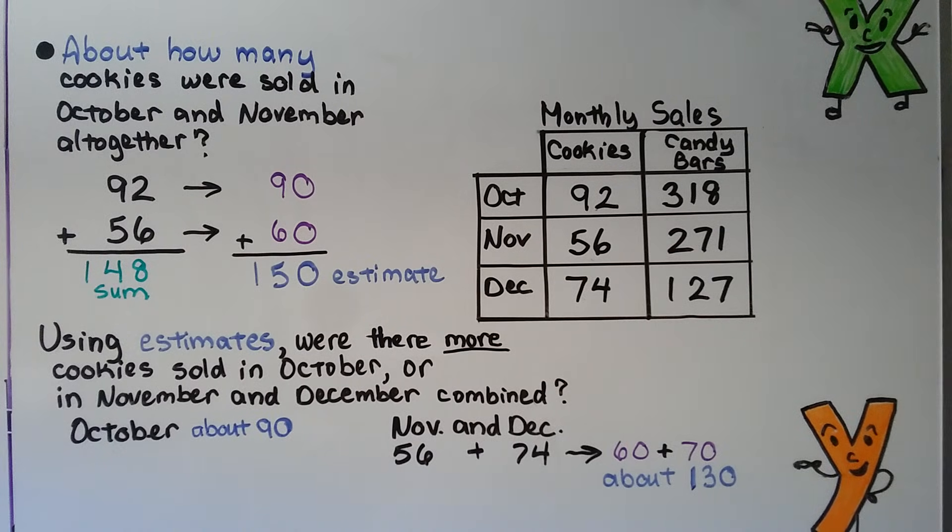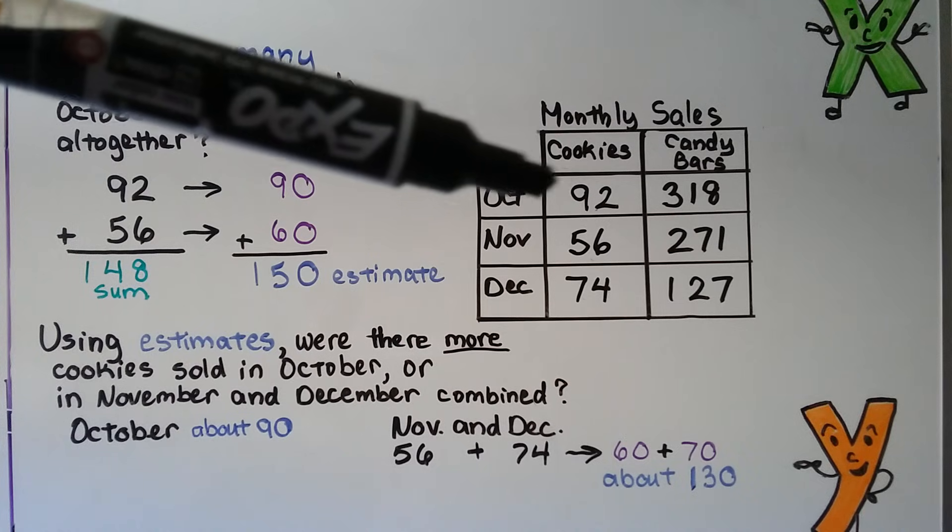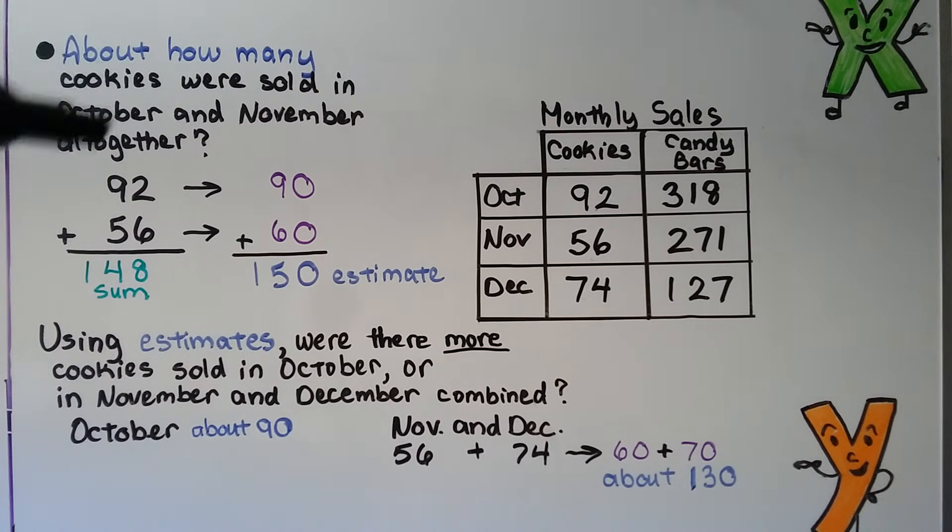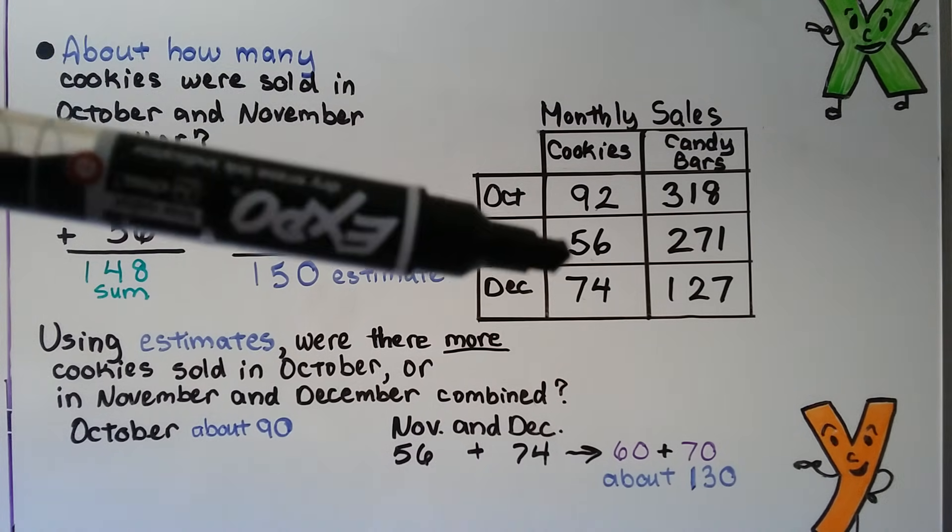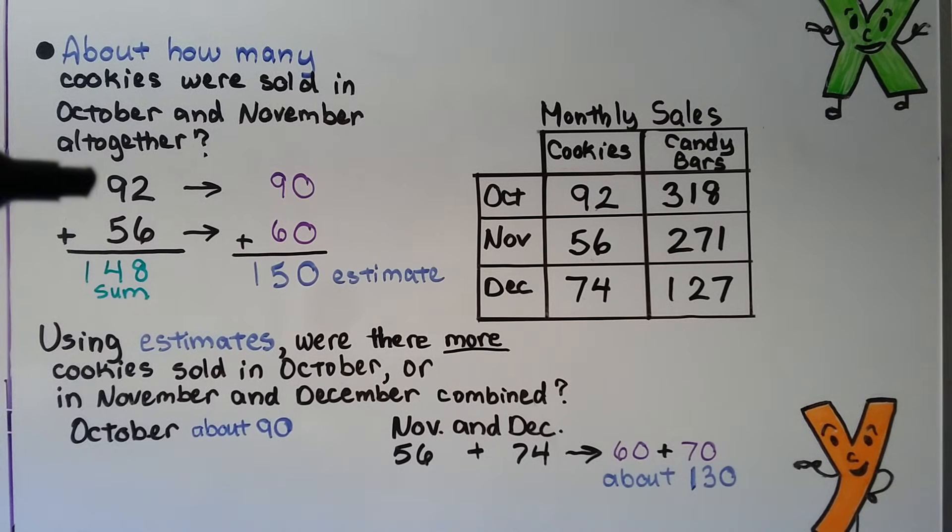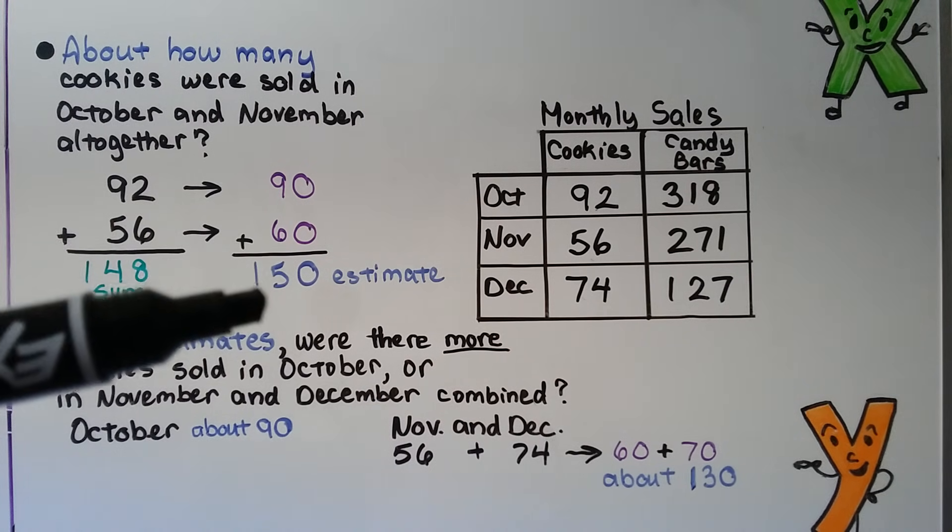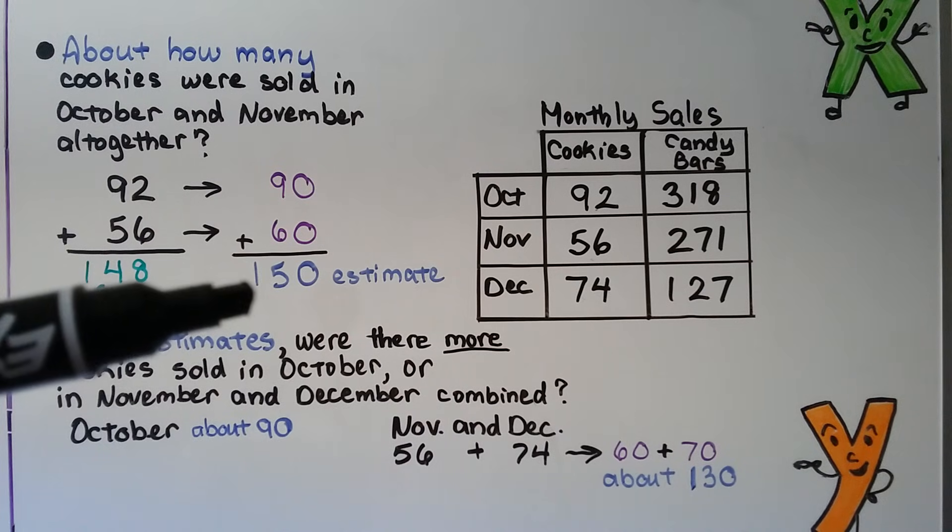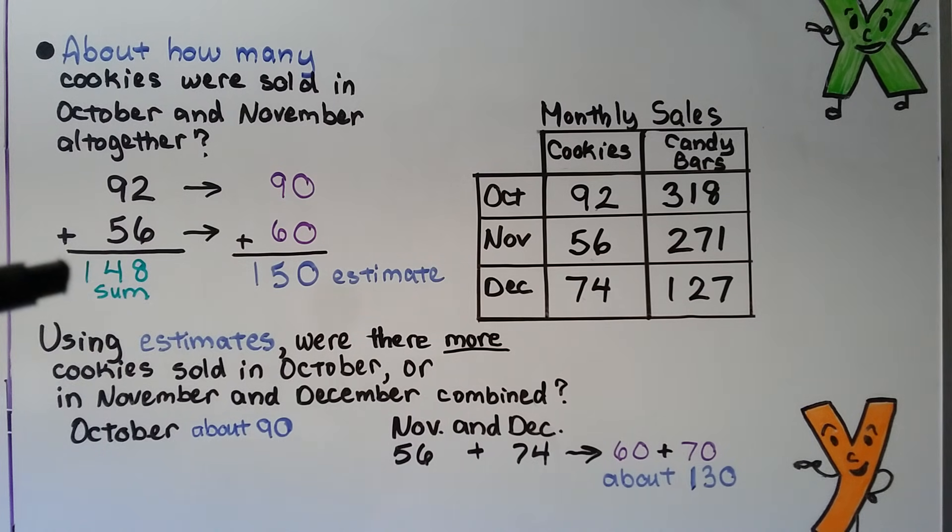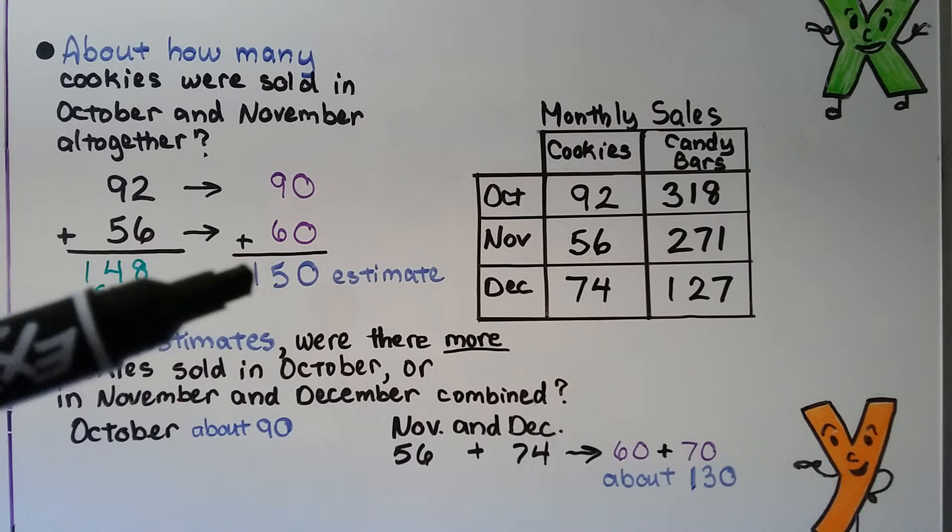So about how many cookies were sold in October and November altogether? So we look for cookies right here. We look for October. It's 92. We look for November cookies. That's a 56. We can round this 92 to a 90. And we can round this 56 to a 60 and add them and get about 150 for an estimate. The actual sum is 148. So that's a good estimate.